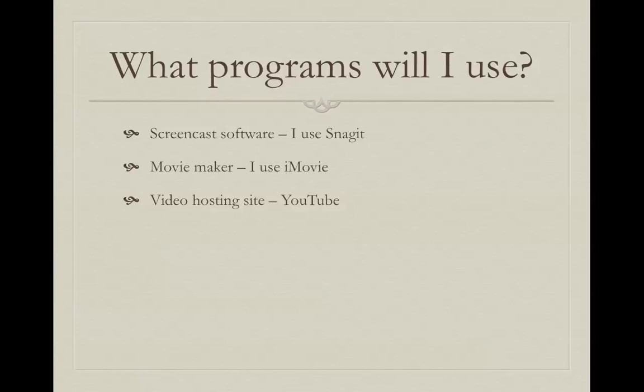Snagit is a screencast software. There are many different companies that make screencast software, so maybe you already have screencast software installed on your computer — that's fine if you want to use that instead. You might also need a movie maker. I use iMovie; I have a Mac, and iMovie is a really good program. For instance, if I had an interview with Greg and then I made a screencast and wanted to combine those two videos together into one, I would use iMovie. It lets me edit and play around like I'm really making a movie.